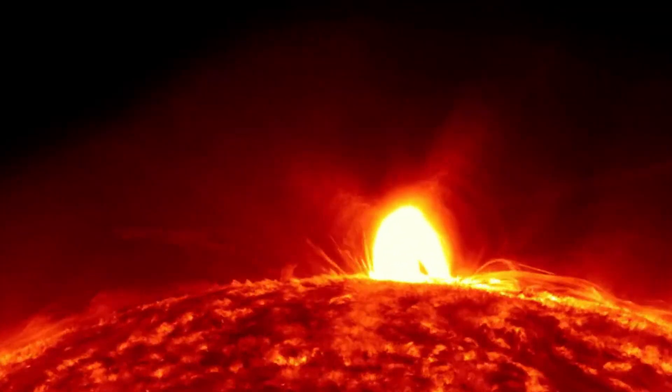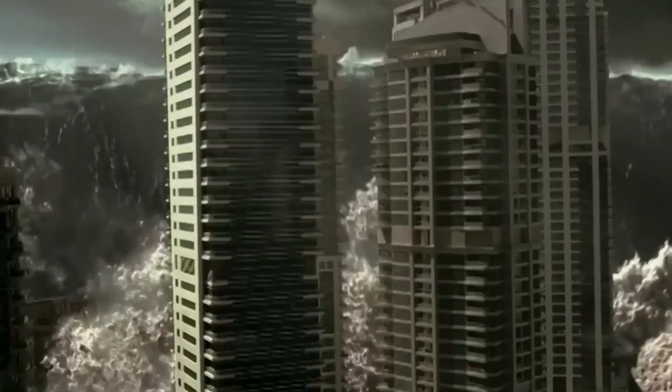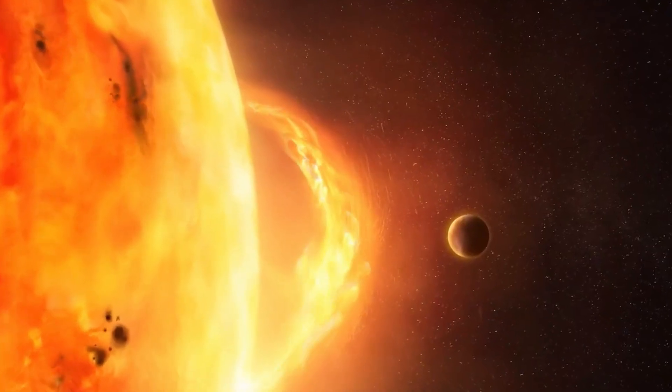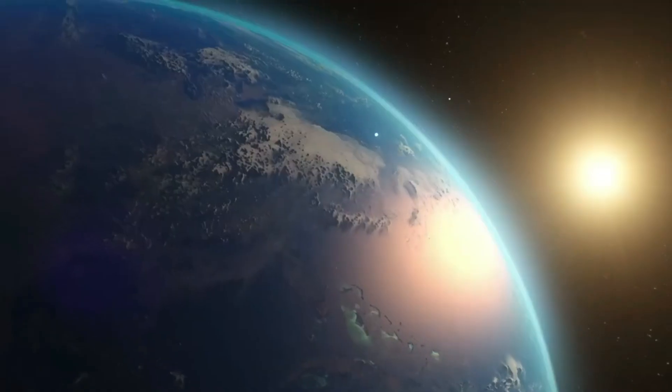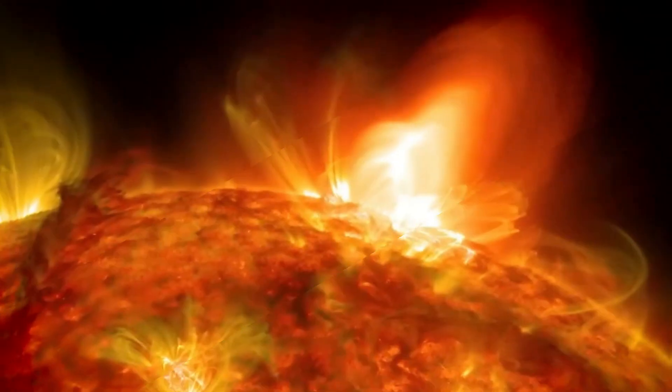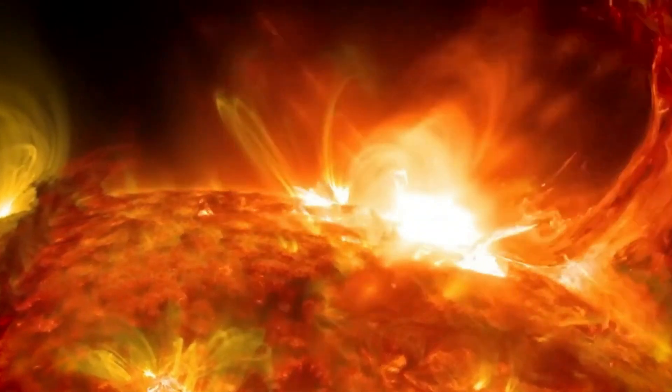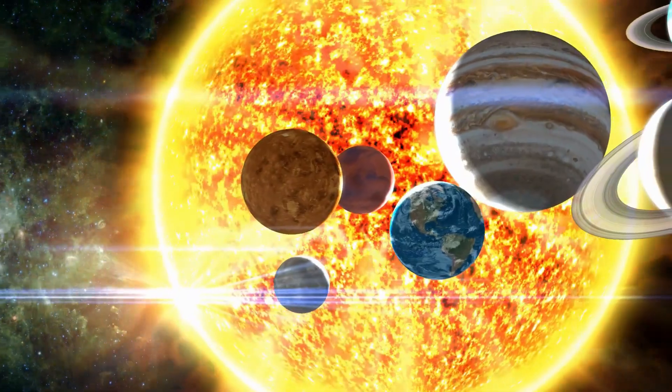As the sun's magnetic fields twist and converge, they store energy like a cosmic spring being wound. When the tension becomes too great, the spring snaps, releasing a colossal burst of energy into the solar system. This is the essence of a solar flare – a magnetic storm on the sun's surface that catapults radiation across the electromagnetic spectrum.